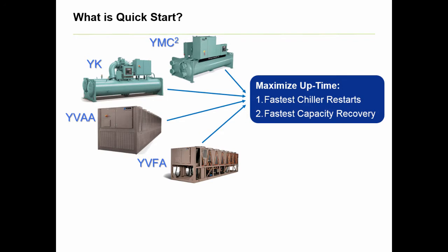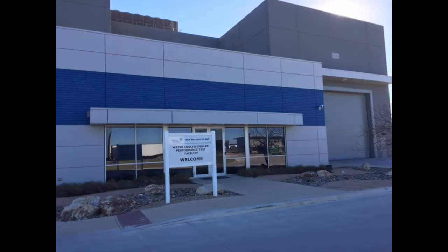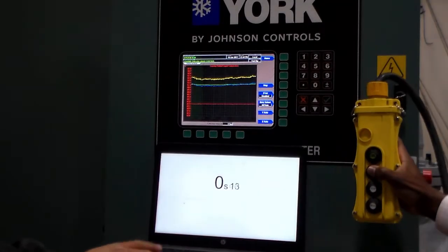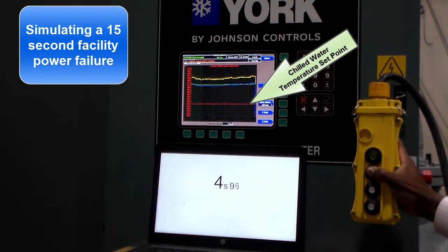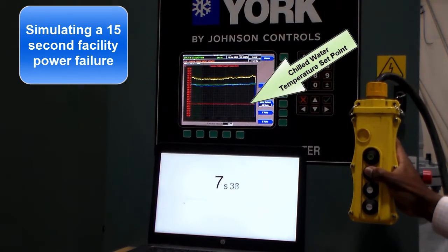To better explain, let's take a look at it in action at the Customer Center of York's Chiller Manufacturing Facility in San Antonio, Texas. Here we're conducting a power loss simulation on a 530-ton or 1865-kilowatt YMC-squared chiller for a York customer.